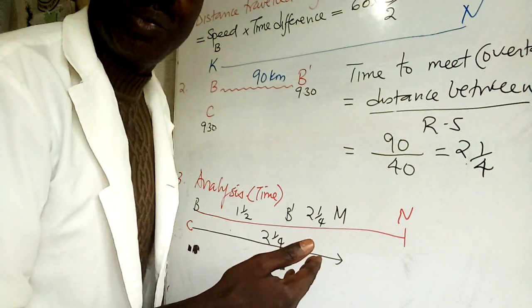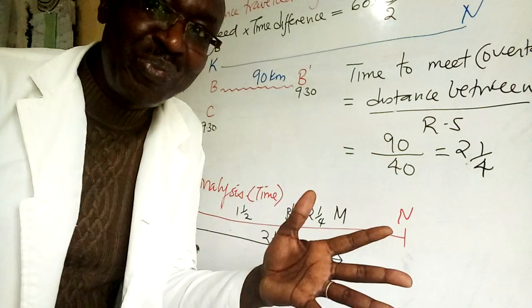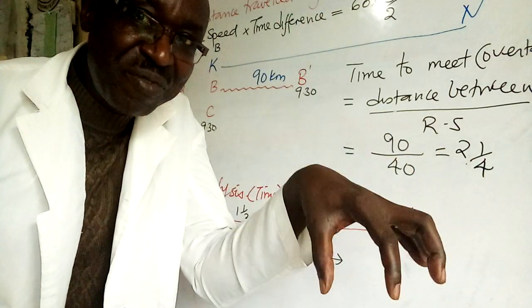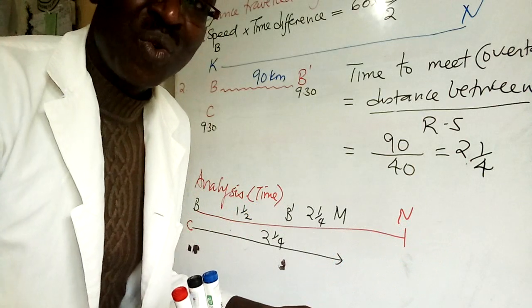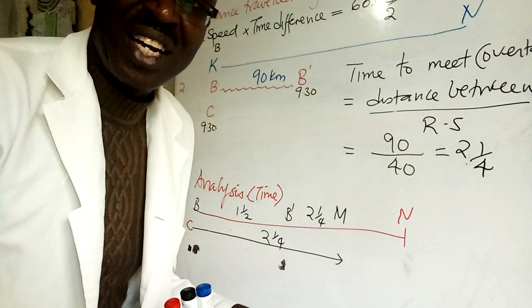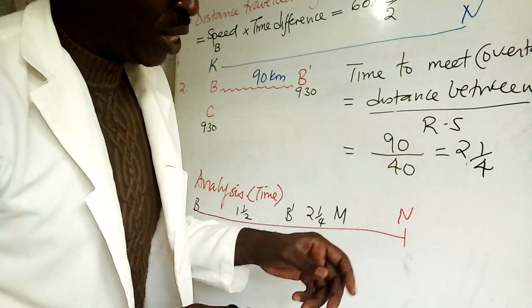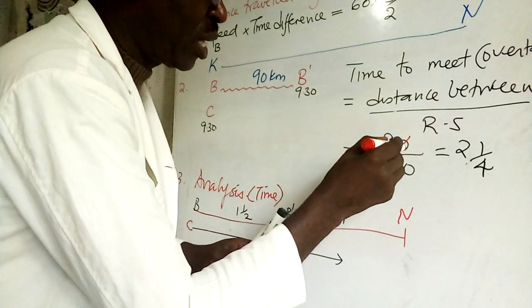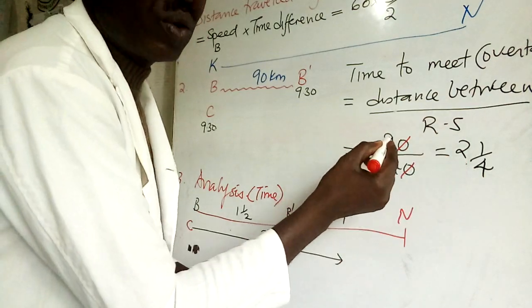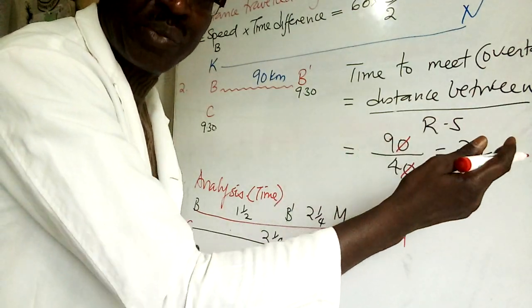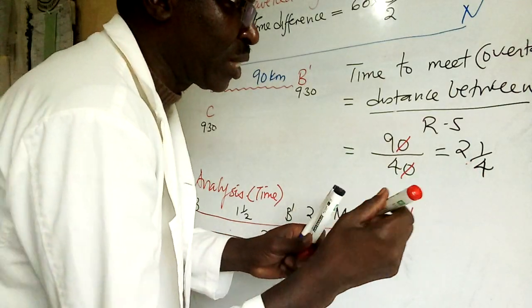Some people call it approaching speed. It's like we are freezing the bus and we see how will the car move. So this one is simple. This one cancels, then four goes here twice, and one over four. You can manipulate this the way you want. These are hours, by the way.